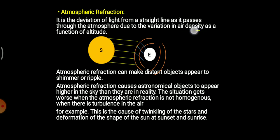In different layers, different amounts of density are present. At different altitudes, different densities are there. Since density is different, different air particles and different water vapors are present in the atmosphere, because of which refraction is occurring.